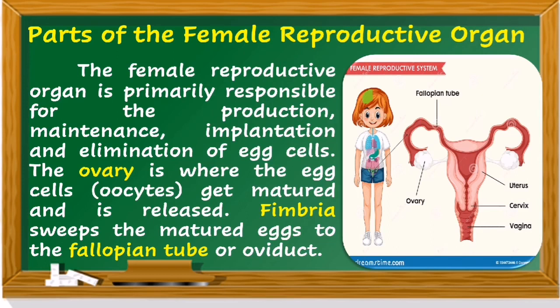The female reproductive organ is primarily responsible for the production, maintenance, implantation, and elimination of egg cells. The ovary is where the egg cells, or oocytes, mature and are released. The fimbriae sweep the matured eggs to the fallopian tube, also called the oviduct. Here is a picture of the female reproductive system and where it is located in the body.